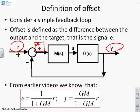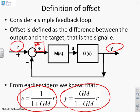From earlier videos you will know that E can be defined as follows: E is 1 over 1 plus GM times R, and the closed-loop transfer function Y comes from GM over 1 plus GM times R. We're going to look at both, because the offset tells us how far away we are, but equivalently we might just want to know where does the output get to.